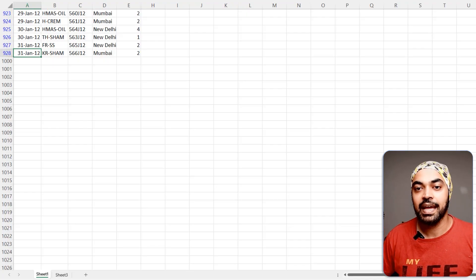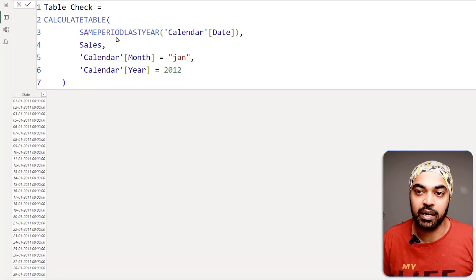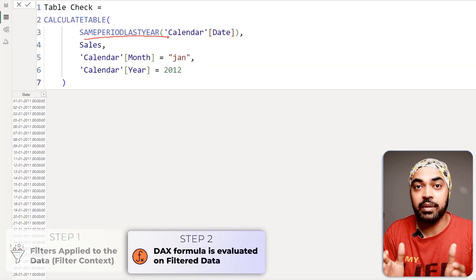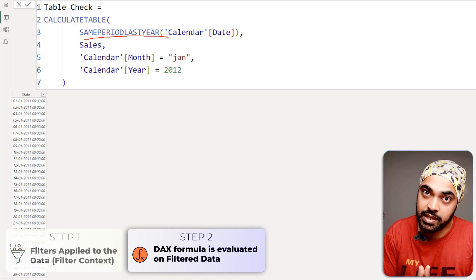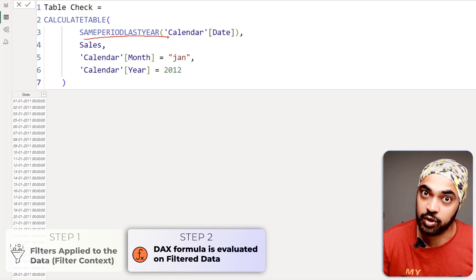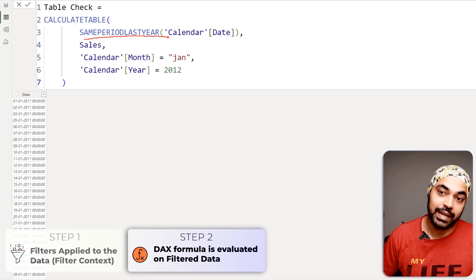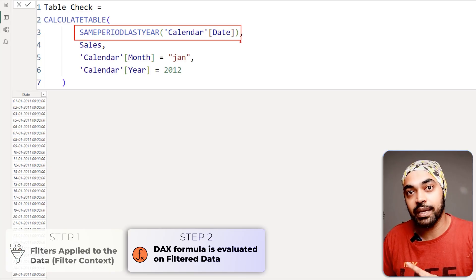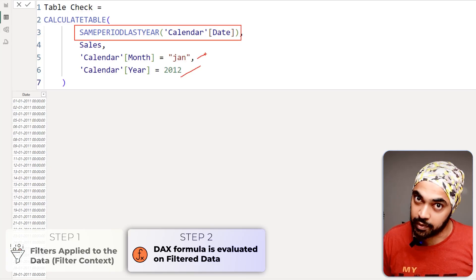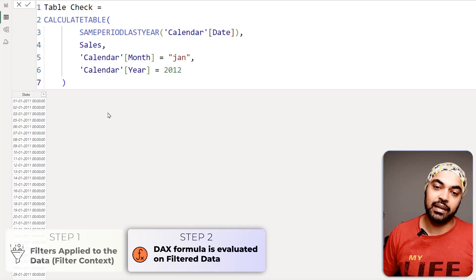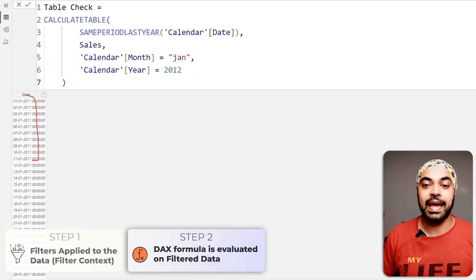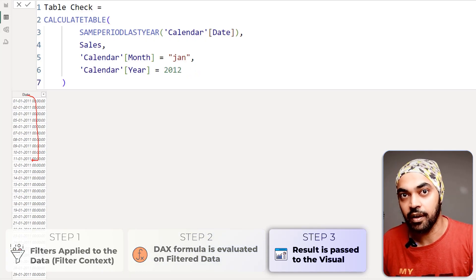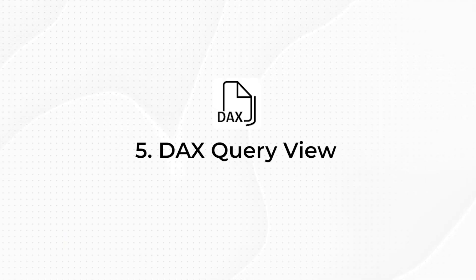These 30 days from January 2012 — days 1 through 30 — are then taken to the same period last year, giving 30 days of 2011. That's the second step: the calculation — same period last year — is carried out on the filtered data, and then the last year dates of 2011 are returned as the answer.